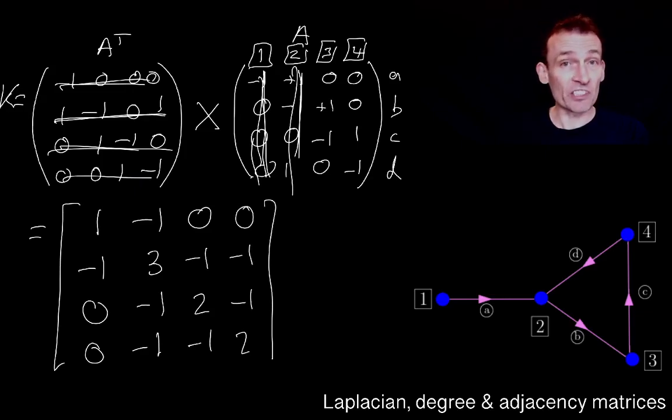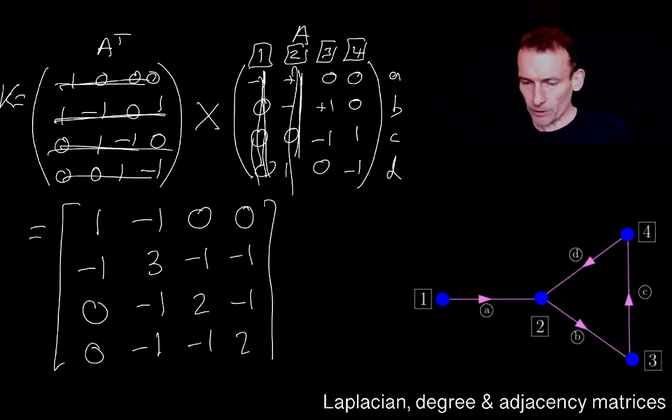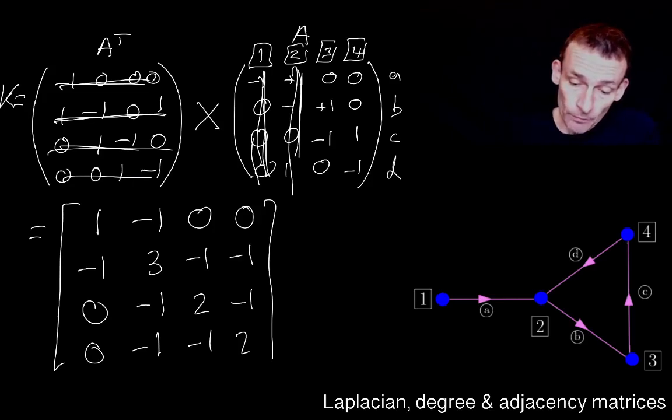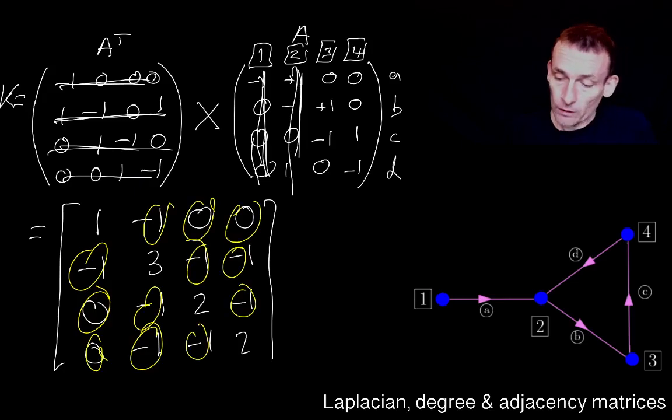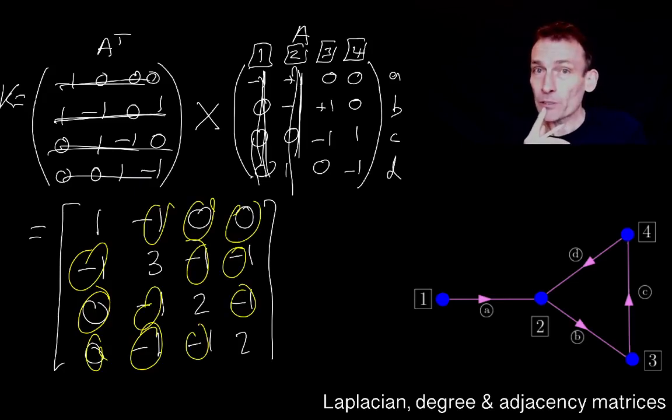Zero, minus one, minus one, two. By the way, I know there was a point there when I could have just filled in the rest by symmetry, but I worked them out anyway just to be sure. Well, let's see if this fits the pattern that we noticed before. First of all, I notice yet again that the off diagonal elements are all minus one or zero.